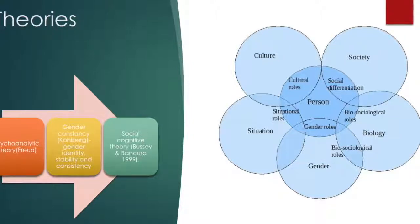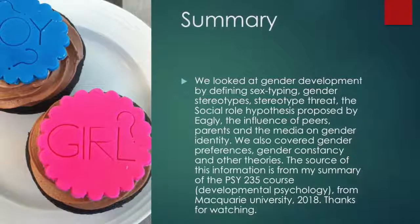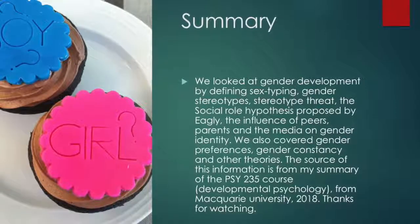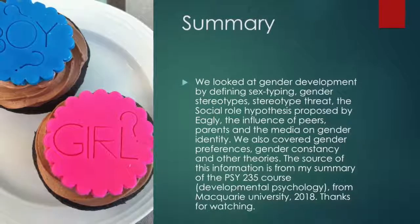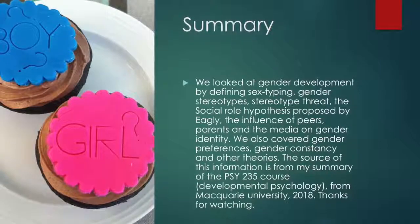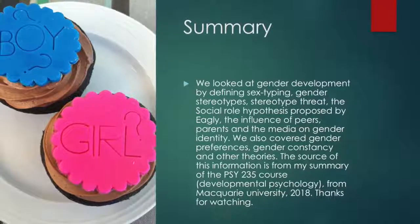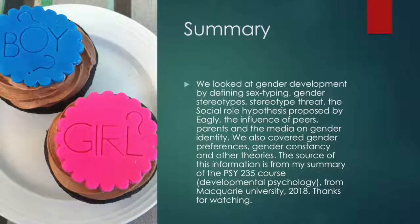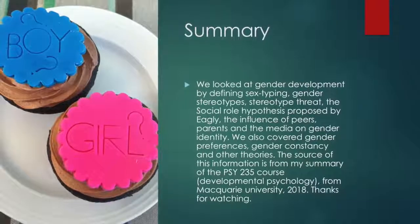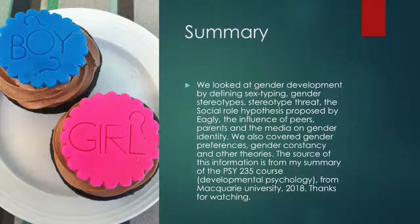In summary, we looked at gender development by defining sex typing, gender stereotypes, stereotype threat, the social role hypothesis proposed by Eagly, the influence of peers, parents, and the media on gender identity. We also covered gender preferences, gender constancy, and other theories. The source of this information is from a summary of the PSY 235 course Developmental Psychology from Macquarie University, 2018. Thanks for watching.